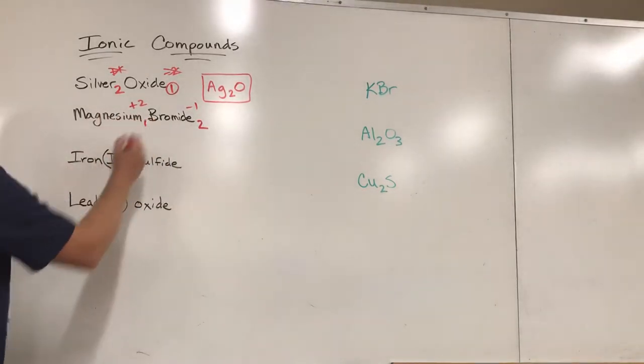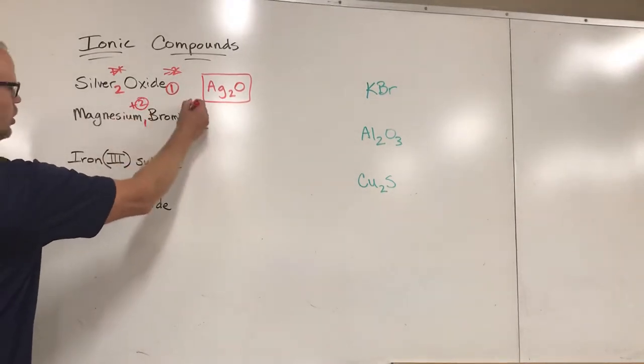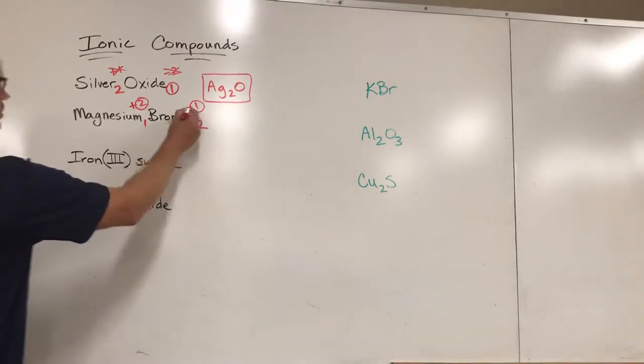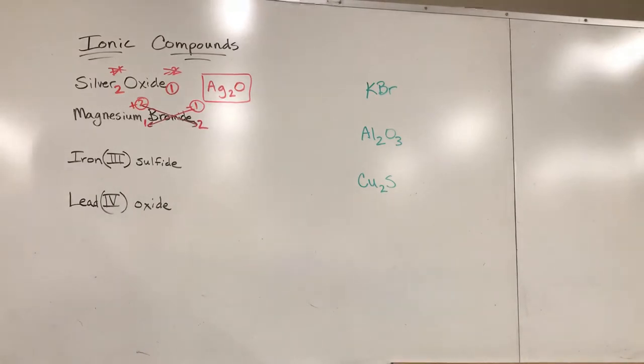Those of you who are noticing some numbers already can see that all we do is - these numbers don't cancel each other out, they don't make zero - and all we do is cross the numbers like this. That gives us the ratio: one magnesium to two bromides.